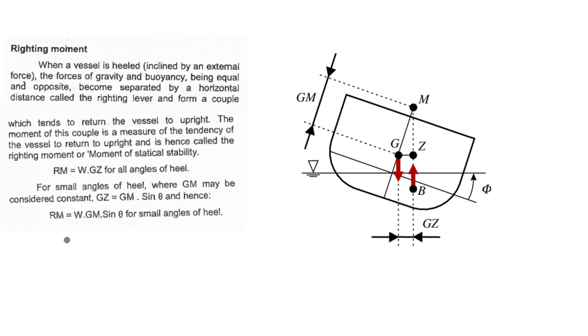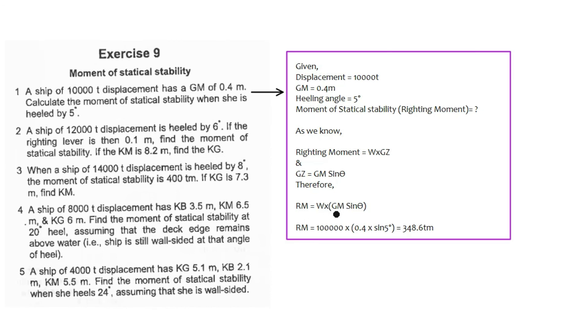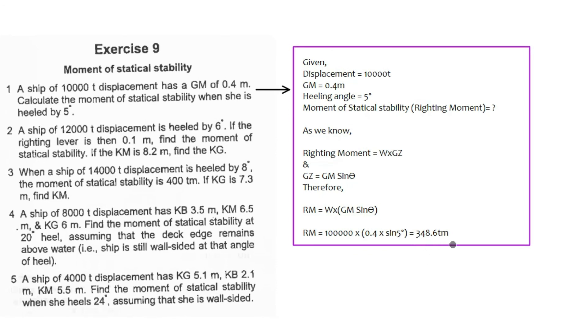Now let's see some questions and see how we can solve it. In question number first, displacement is given, GM is given, heeling angle is five degrees which is small angle of heel. So we have to find moment of statical stability which is righting moment. So righting moment formula is W cross GZ. GZ equal to GM dot sin theta. So RM equal to W cross GZ, which is GM sin theta. So we will directly put the whole value and we will get the answer which is 348.6 ton meter.